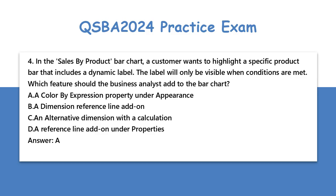Question 4: In the Sales by Product bar chart, a customer wants to highlight a specific product bar that includes a dynamic label. The label will only be visible when conditions are met. Which feature should the business analyst add to the bar chart?